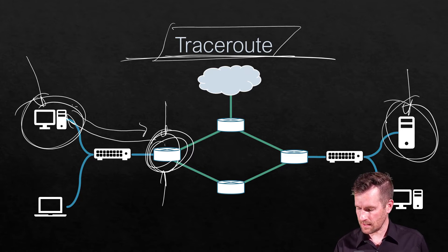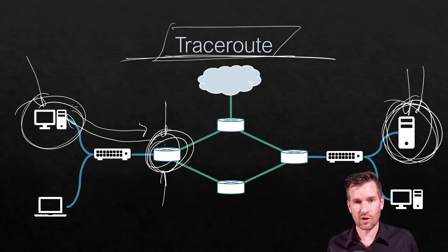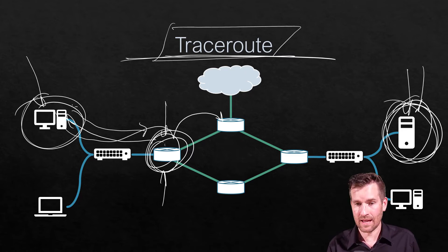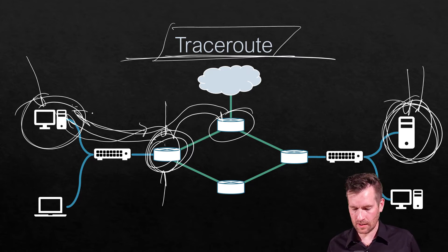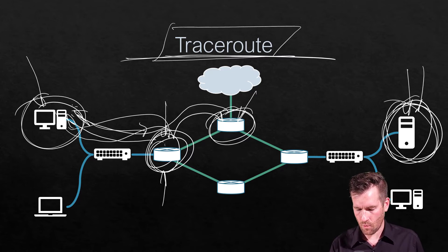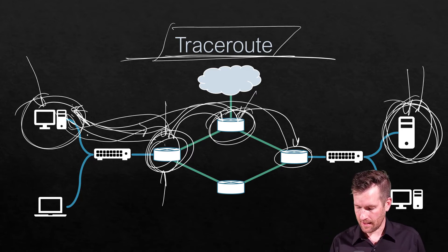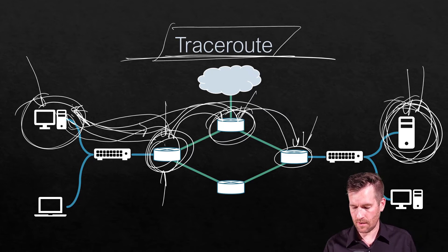Then this machine will send something out saying I want to send a ping request to this machine, and I'm going to set a time to live of two — so one and two — and this router right here will send a message back saying destination unreachable, and will include some information about this router. Then next, I am going to send out a ping request with a time to live of three — one, two, three — then this router will send a message back saying that destination is unreachable, and here's some information about myself.